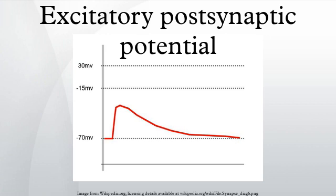In quantal analysis, the release of neurotransmitter vesicles from the presynaptic cell is probabilistic. In fact, even without stimulation of the presynaptic cell, a single vesicle will occasionally be released into the synapse, generating miniature EPSPs. Bernard Katz pioneered the study of these miniature EPSPs at the neuromuscular junction in 1951, revealing the quantal nature of synaptic transmission.